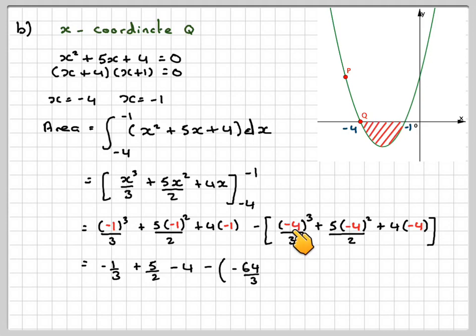Keep that minus sign. We'll keep the bracket in. And then we get minus 4 cubed, which is minus 64 over 3, plus 5 times 16. Minus 4 squared is 16 over 2, which gives 80 divided by 2, which is 40, and then minus 16.